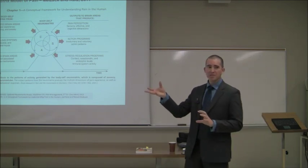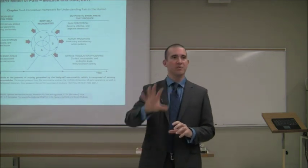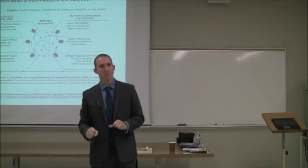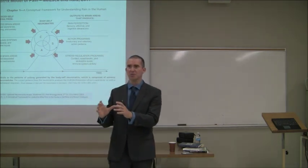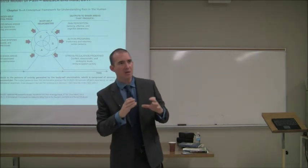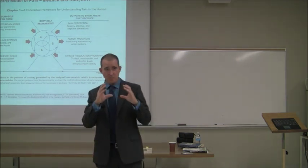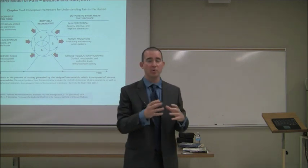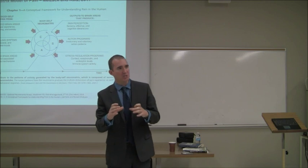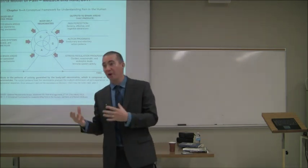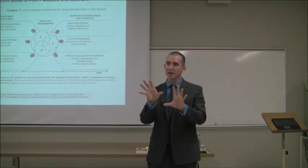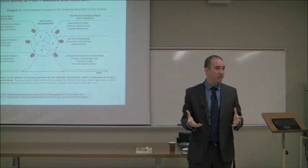So the neuromatrix model basically says we have the sensory discriminative domain — where is it, how intense is it, what does it feel like — the basic factual information. We've got the cognitive evaluative domain, which is what does it mean, what happened the last time I experienced this, what worked in the past. And then there's the motivational affective piece — how does this make me feel, is there anything I need to do about this? It's only when all three domains come together that somewhere in the middle we might experience pain.